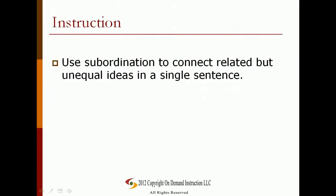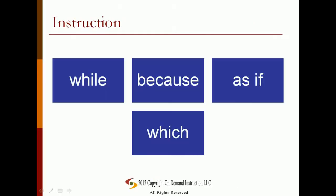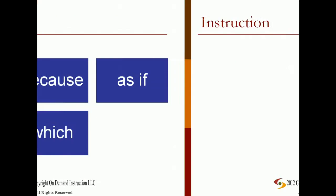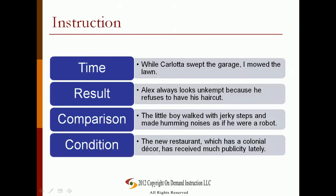Another way to connect ideas within a sentence is to use subordination. By making one clause subordinate to another, you can make that clause describe or modify another in a complex sentence. Use subordination to connect related but unequal ideas in a single sentence. The subordinate clauses begin with words such as while, because, as if, which, and contain supporting ideas. The following examples show logical relationships that can be indicated by the use of subordinate clauses.